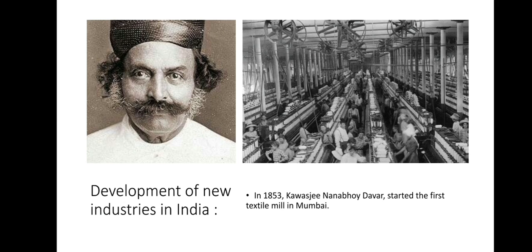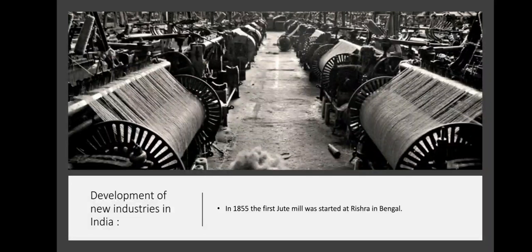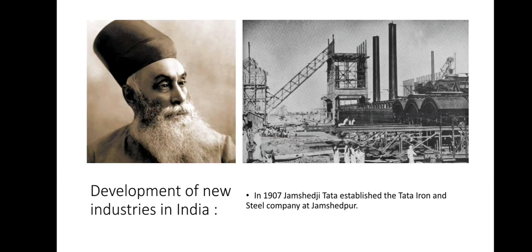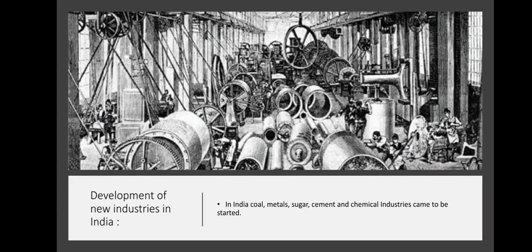In 1853, Kawasji Nanabhai Davar started the first textile mill in Mumbai. In 1855, the first jute mill was started at Rishra in Bengal. In 1907, Jamshedji Tata established the Tata Iron and Steel Company at Jamshedpur. In India, coal, metals, sugar, cement and chemical industries also came to be started.